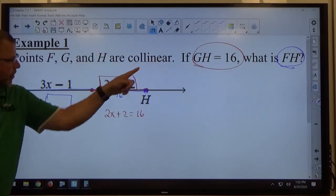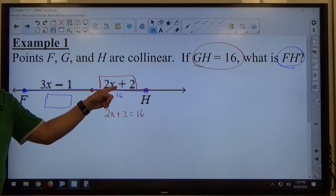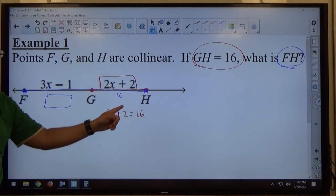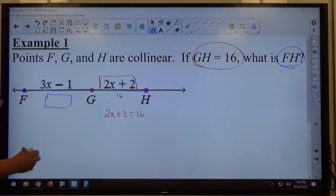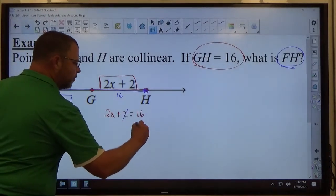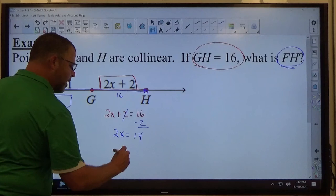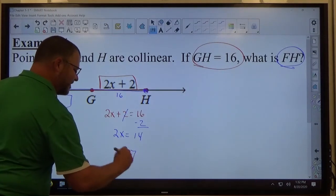So once again, GH equals 16, GH is identified as 2X plus 2, therefore, 2X plus 2 equals 16. We're going to chop the 2, subtract, we're going to get 2X equals 14, we're going to divide by 2, we're going to get X equals 7.